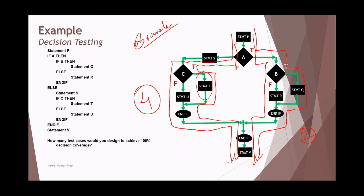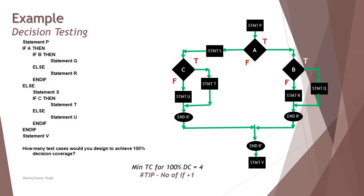Do not get deviated with respect to the statements provided here and do not start covering the statements. Anyways for this kind of example, the statement and decision test cases will be the same. Now that you understood with this example that minimum test cases for 100% decision coverage here is equal to four.